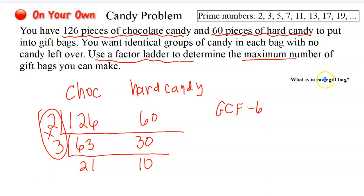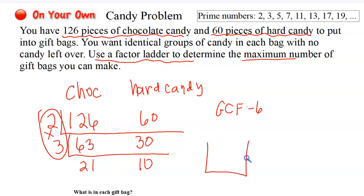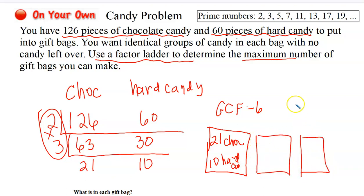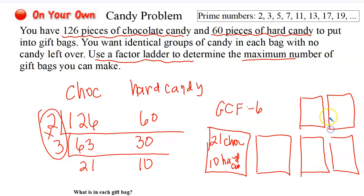I multiply two times three — the greatest common factor is six. And here's the question of what's in each gift bag. The answer is right at the bottom: each gift bag has 21 chocolate candies and 10 hard candies, and there are six gift bags total.